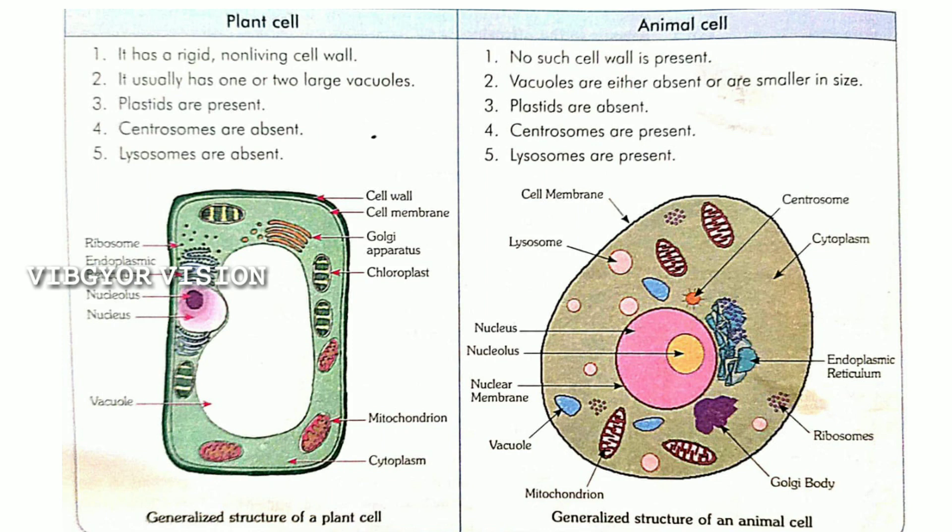Next is Golgi bodies or Golgi complex. In plant cell, Golgi complex is present in large numbers and they are scattered. But in animal cell, only one Golgi body is present.